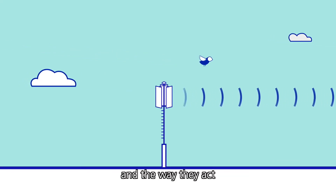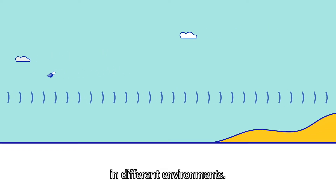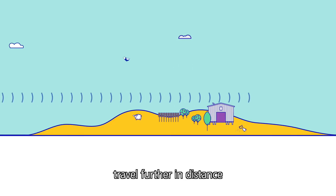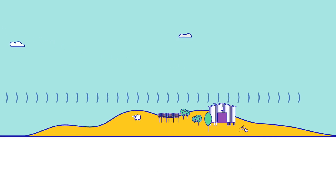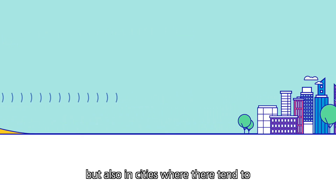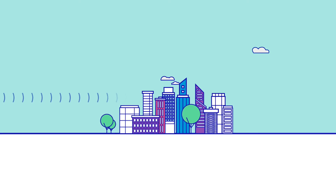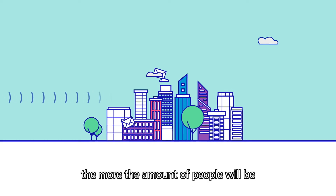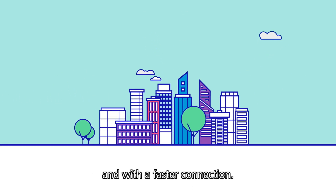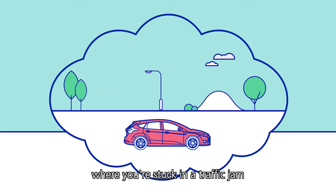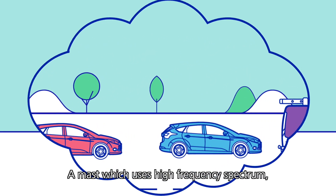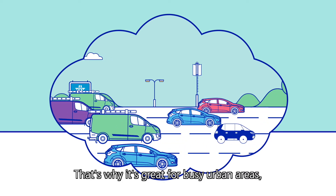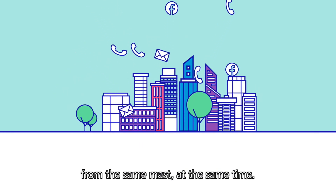It's all to do with the different frequencies we have and the way they act in different environments. For example, if the Spectrum frequency is low, the signal transmitted by the mast will travel further in distance and further into buildings through walls. So it's great not just for rural areas, but also in cities where there tend to be lots of buildings. And high frequency? The higher the frequency, the more people will be able to use our network in that area and with a faster connection. Think back to the traffic analogy earlier, where you're stuck in a traffic jam because there are so many cars on the road. A mast which uses high frequency Spectrum would be like a motorway with more lanes. That's why it's great for busy urban areas where lots of people are trying to get signal from the same mast at the same time.